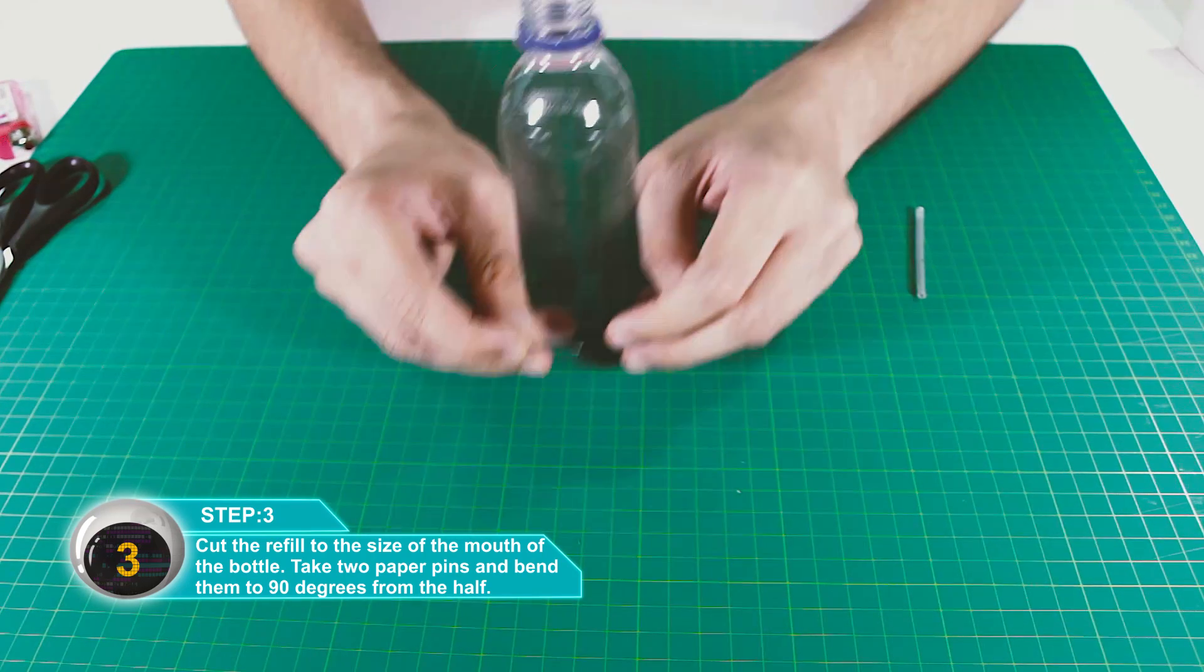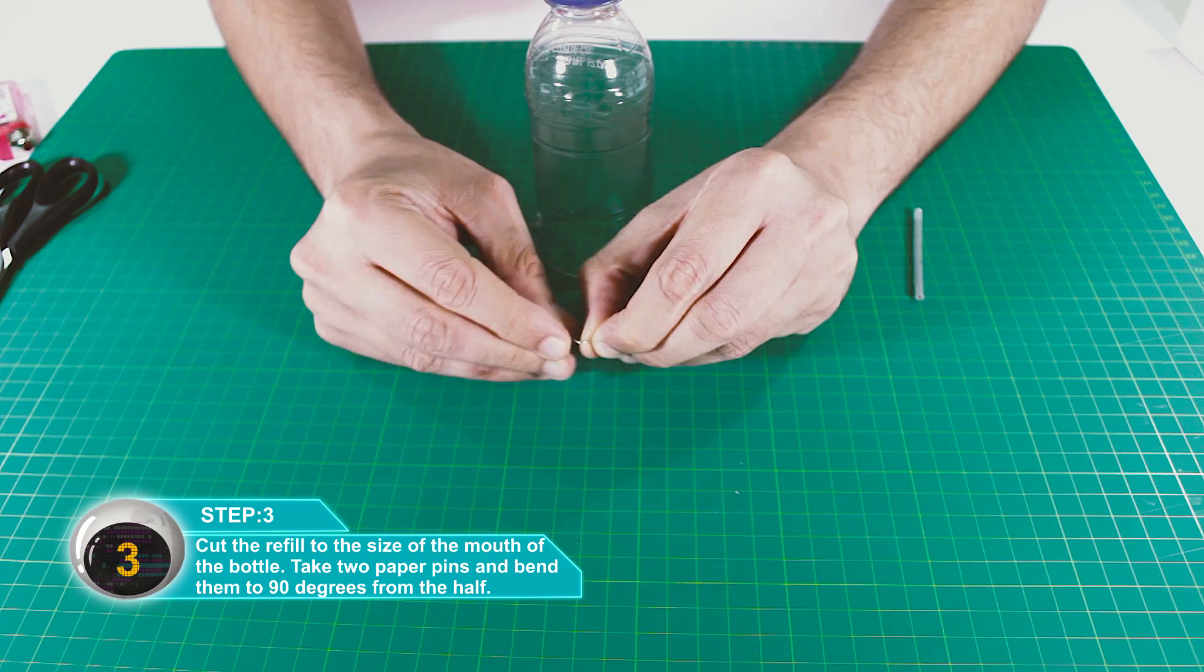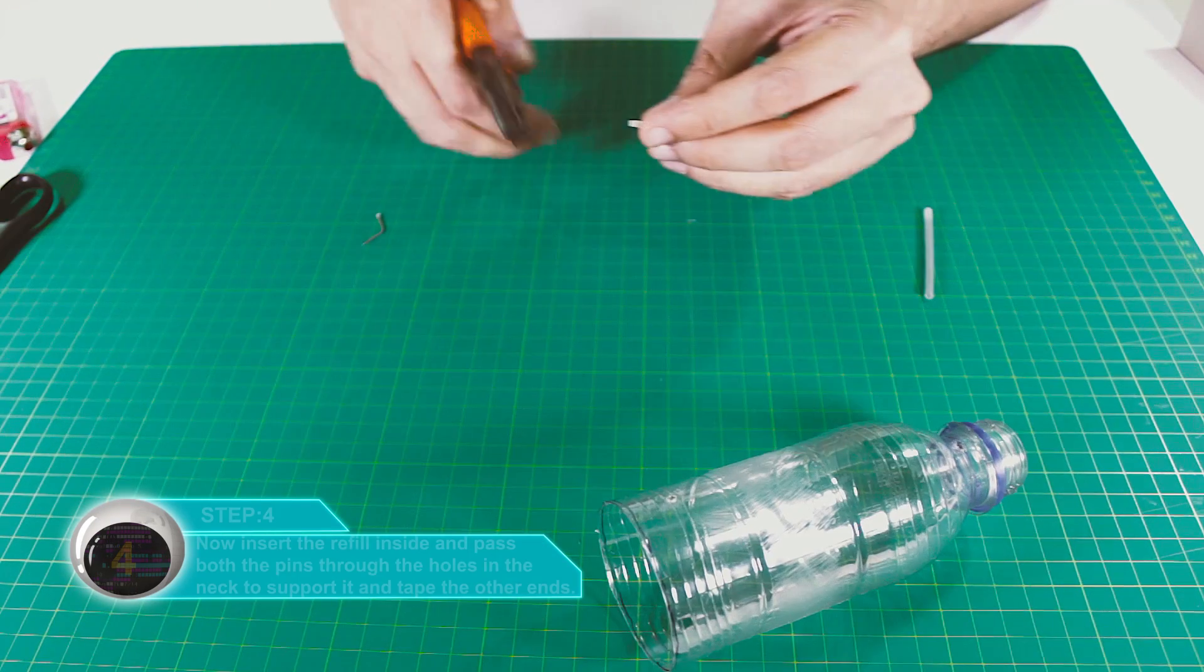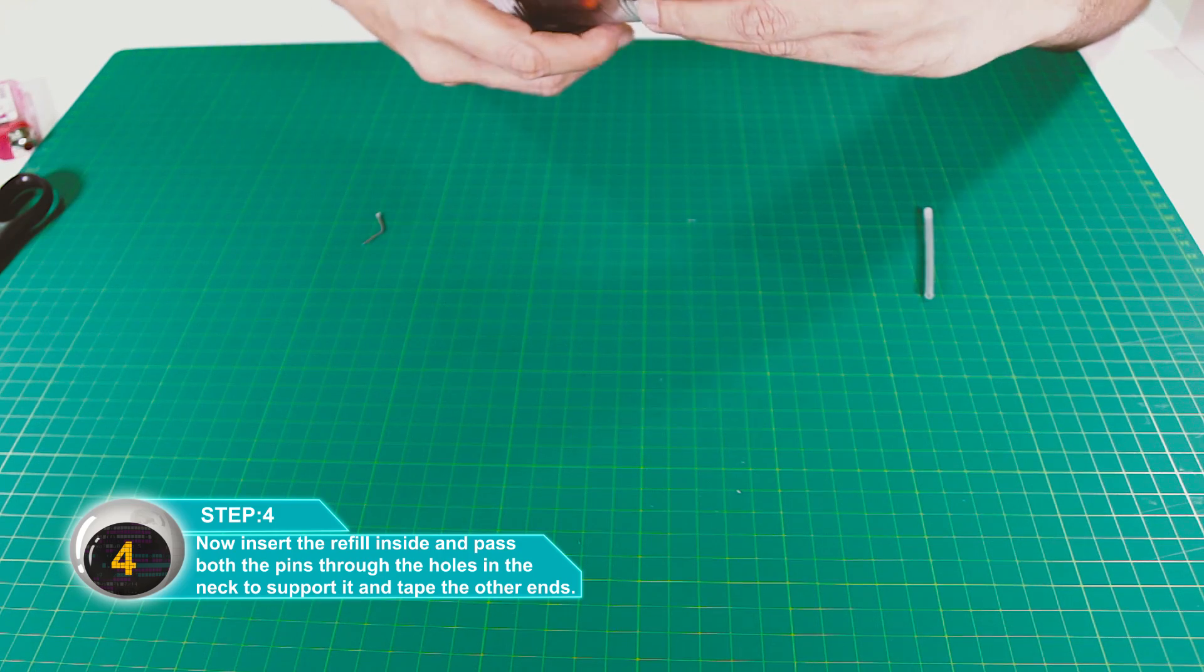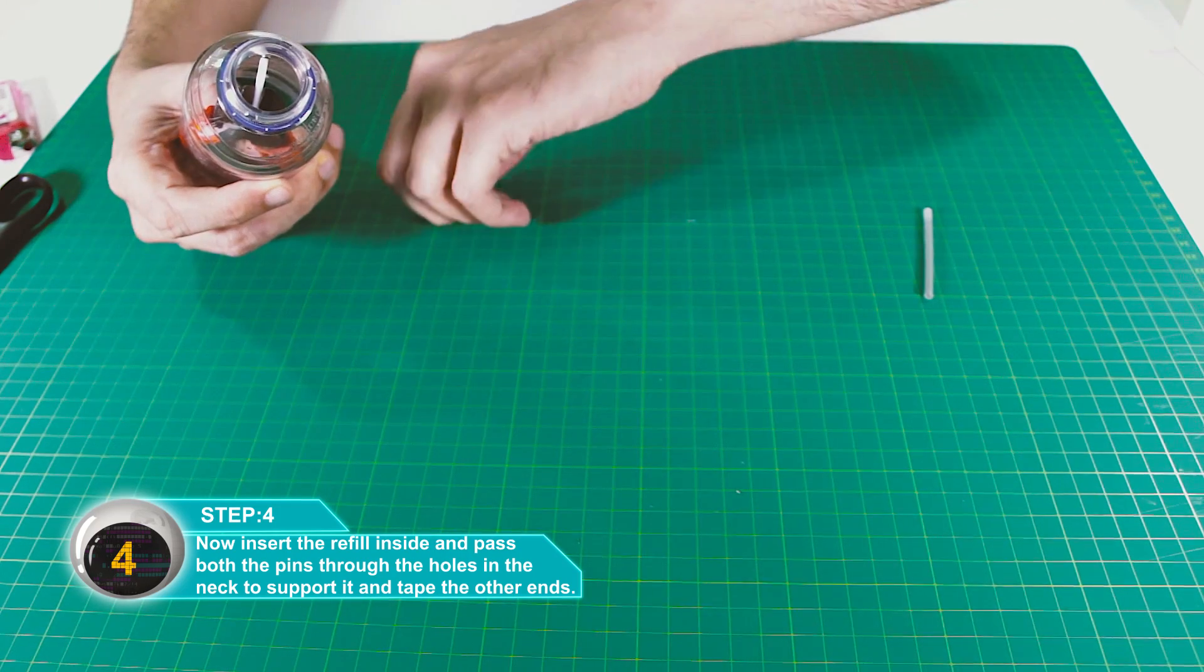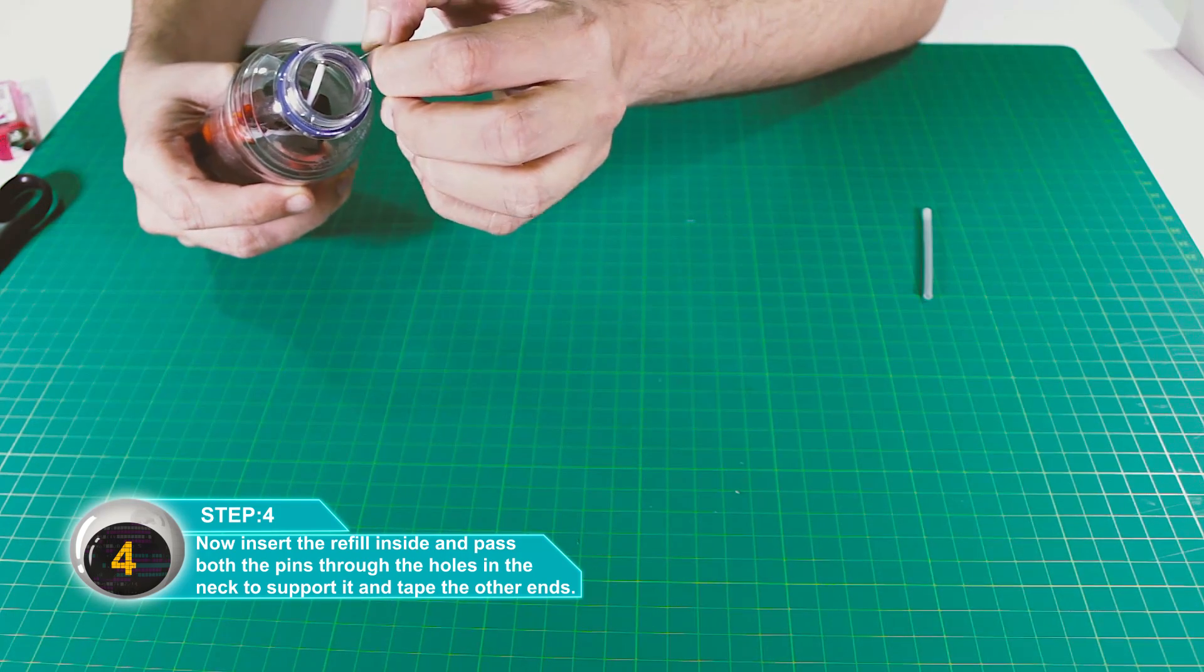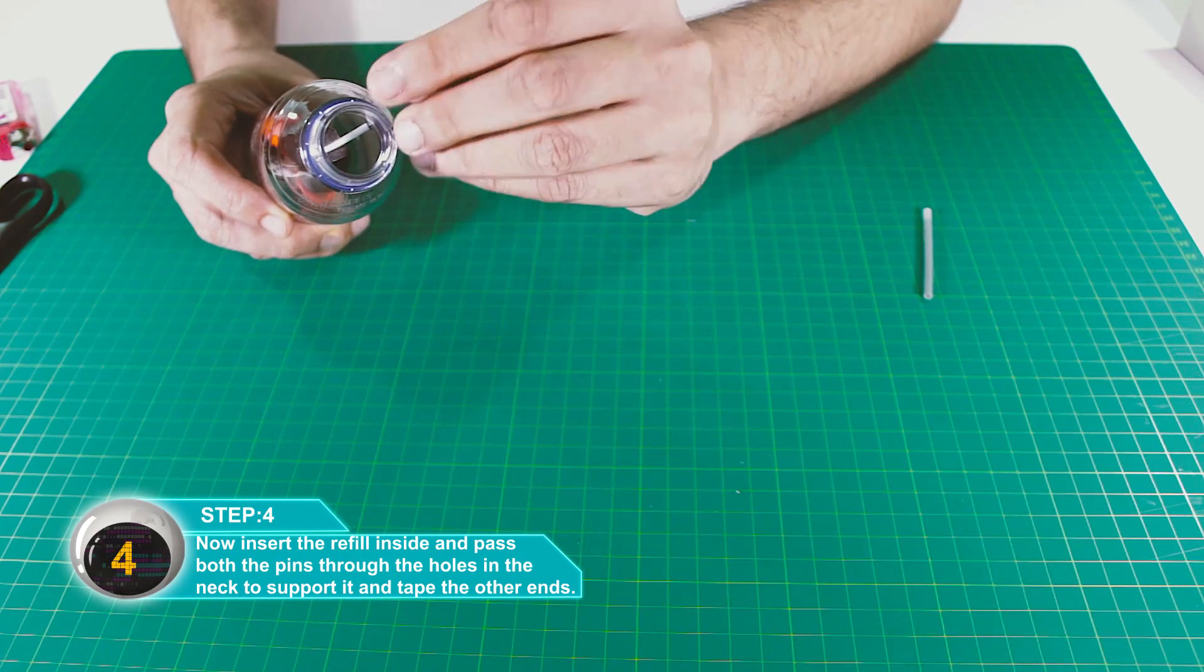Take two paper pins and bend them 90 degrees at the halfway point. Insert the refill inside, then pass the pins through the top two holes and into the refill.